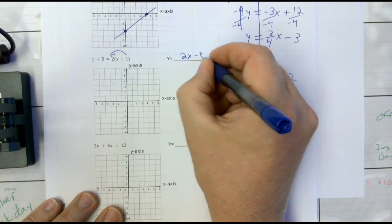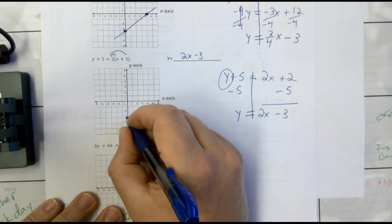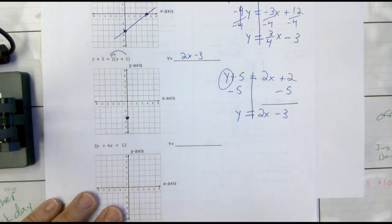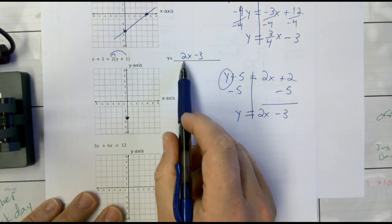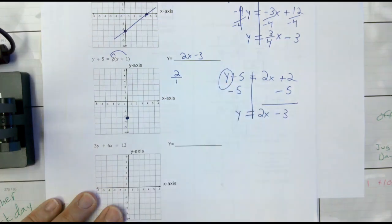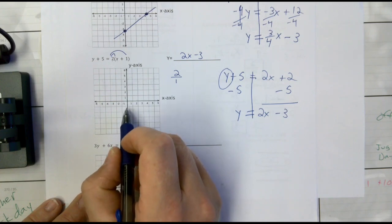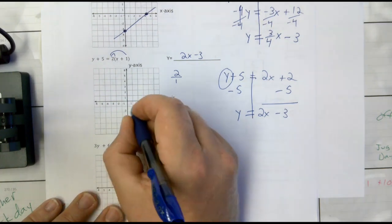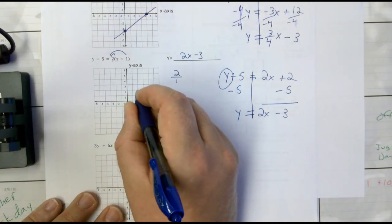Now let's graph y equals two x minus three. Negative three is my y-intercept again — just a coincidence. With two as our slope, as a fraction that's two over one. We run to the right one and go up two over one, up two over one, up two over one. There's our line.